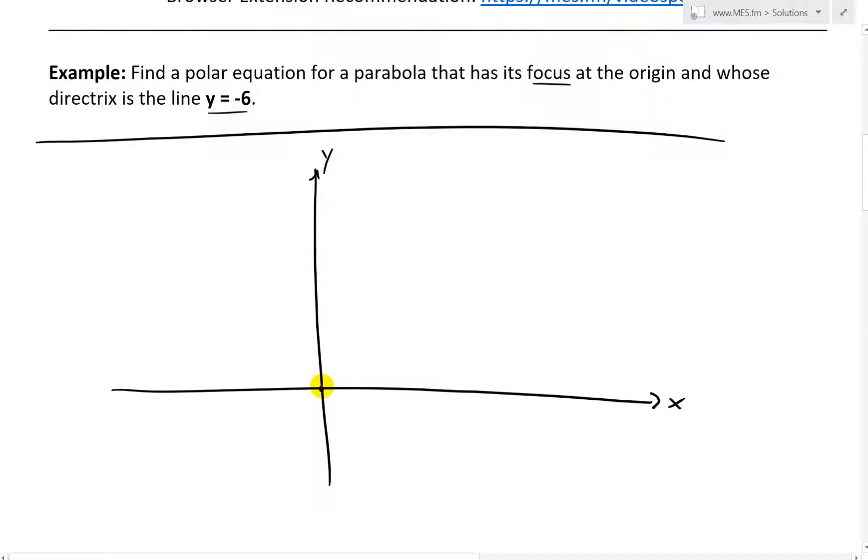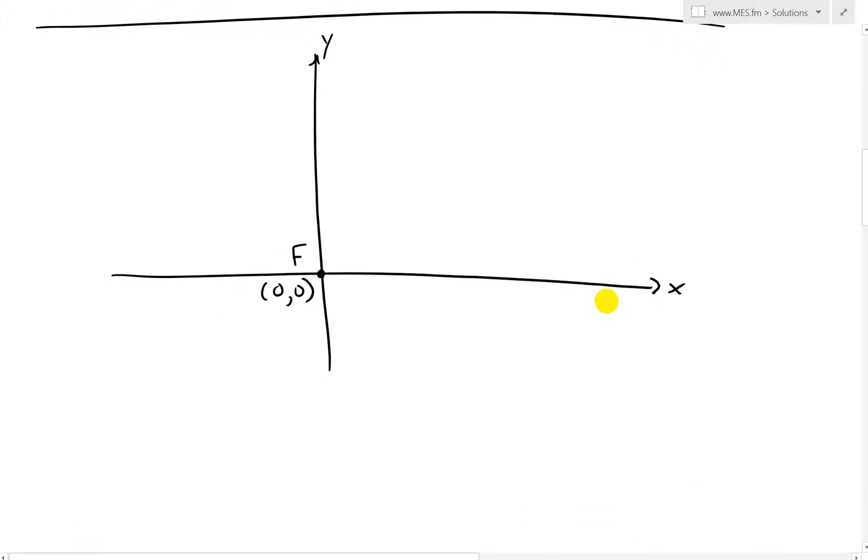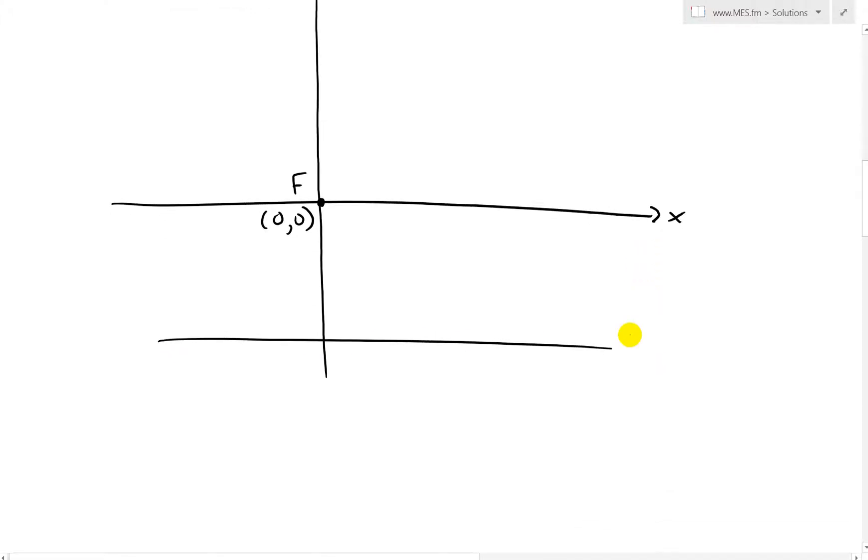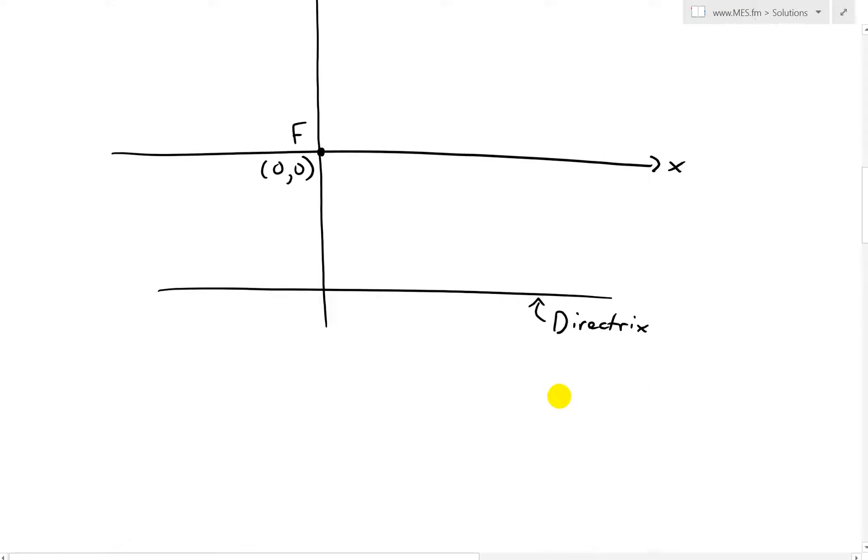So it has its focus here. So this is a polar axis. That is the pole or the focus right here. Call that F. And F is at 0, 0 of the coordinates here. And it says find a polar equation for a parabola that has its focus there and whose directrix is at the line y equals negative 6. So I'll draw this out like this. And let's say this is here. This is our directrix. I'll write this as directrix. And it is at y equals negative 6. So this point right here is negative 6 from here.